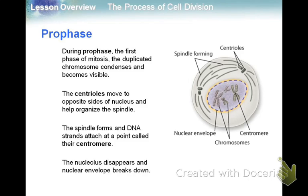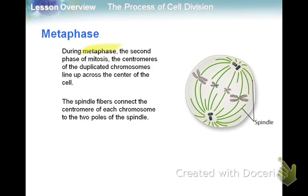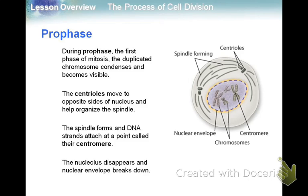The first step of mitosis is prophase. The key word is 'prepare.' The chromosomes condense and become visible — they're duplicated at this point because we're past S phase. The centrioles move to opposite sides of the nucleus and organize the spindle, which then attaches to the DNA strands at their centromere. The nucleolus disappears, and the nuclear envelope breaks down.